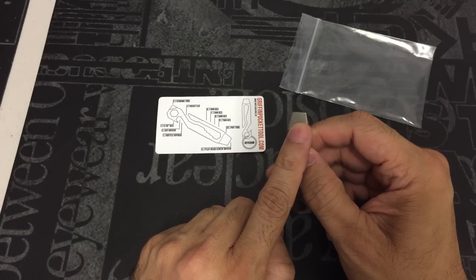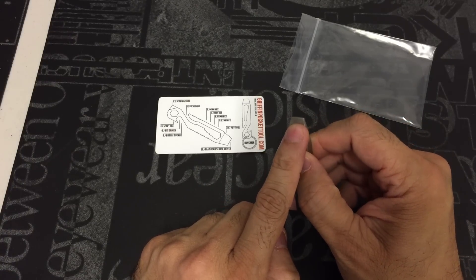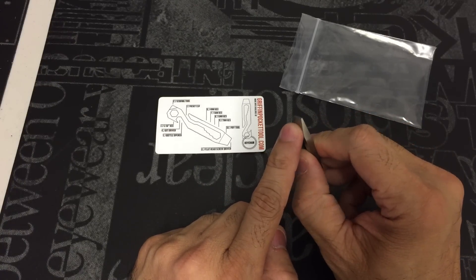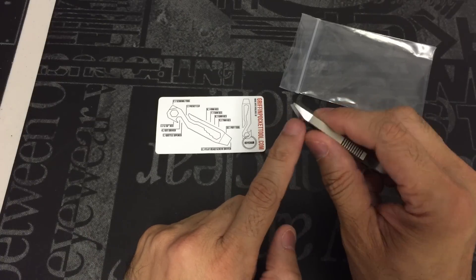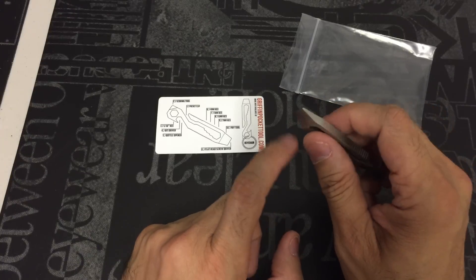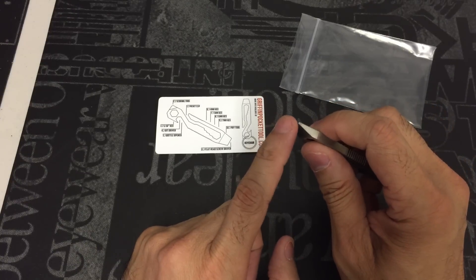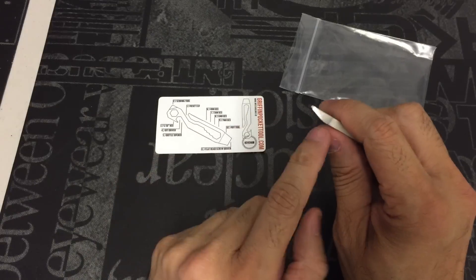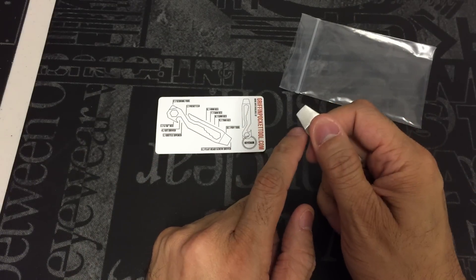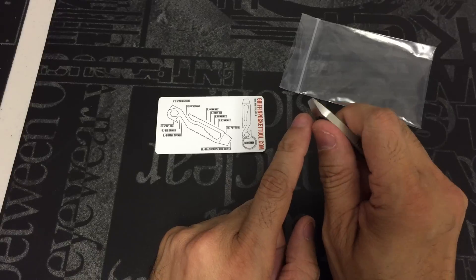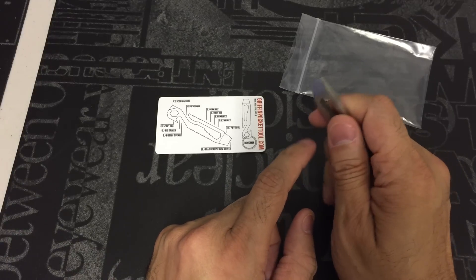On the end right here, you have a pretty robust flathead screwdriver that also doubles as a pry tool. And I think that right there is one of the other tools that I really do enjoy using on the Griffin tool. Because it's very wide but it's big enough to where I don't feel that the tool is going to buckle or break under the pressure if I do have to pry something pretty heavy or anything like that.